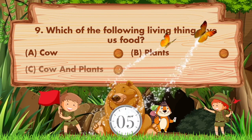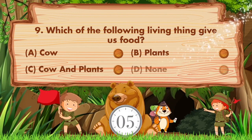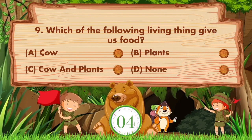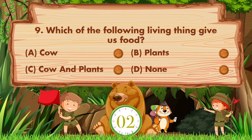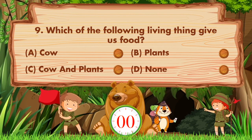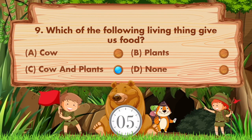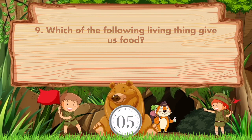Which of the following living things give us food? Option A is cow, B plants, C cow and plants, D none. Answer is option C: cow and plants.